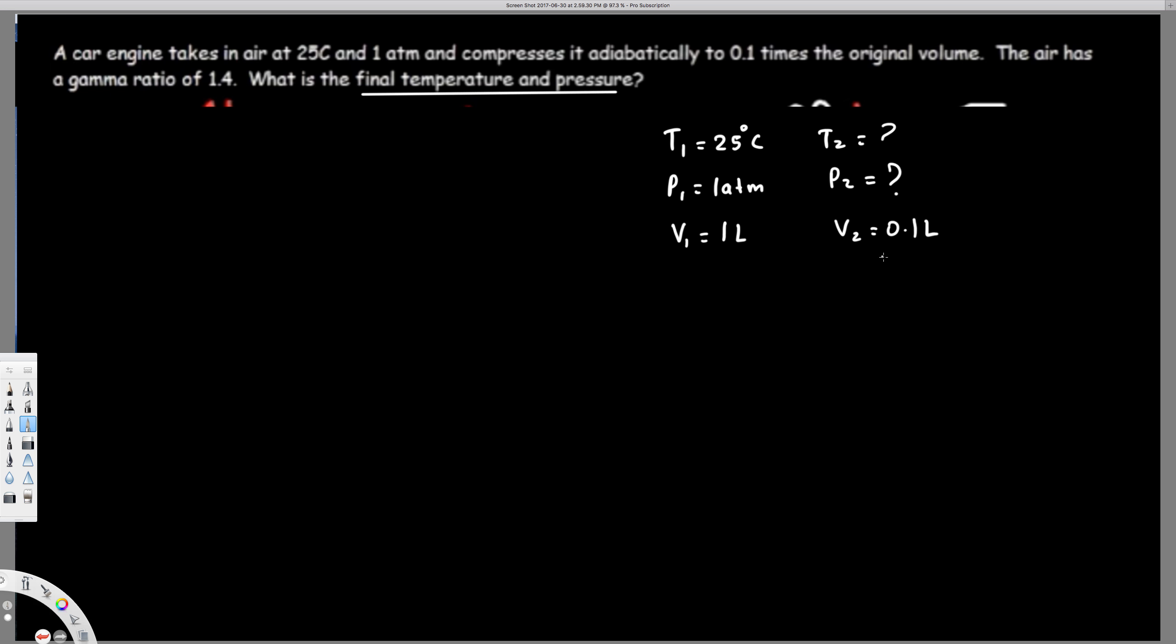So here, which equation can we use? If you think about the combined gas law: P1V1/T1 = P2V2/T2. Here we have P1, V1, and T1, but we have two unknowns, so we can't use this equation to find this one. We have to use a different equation.